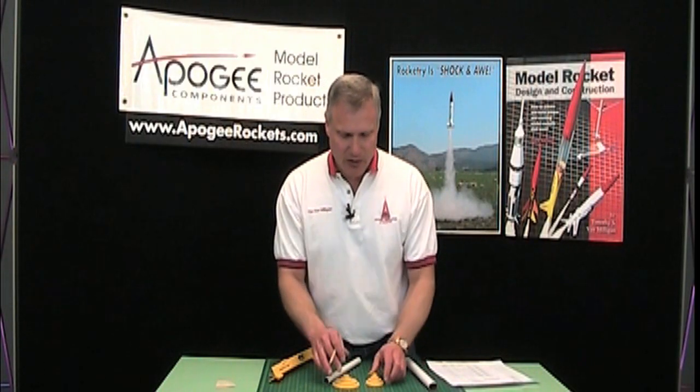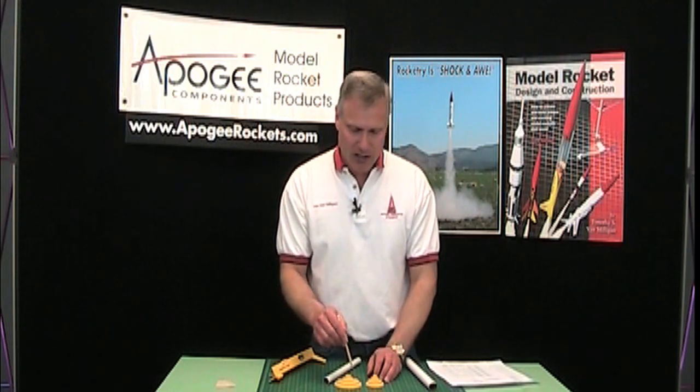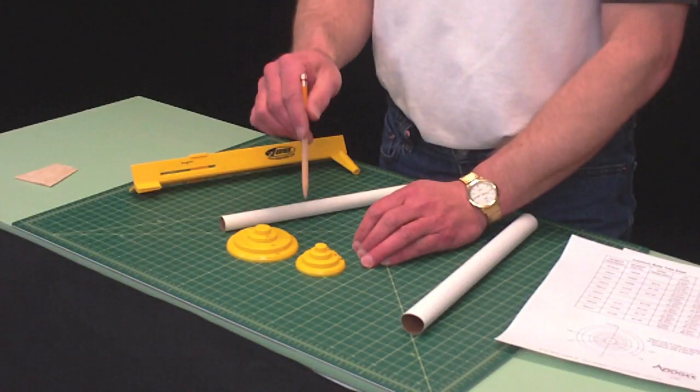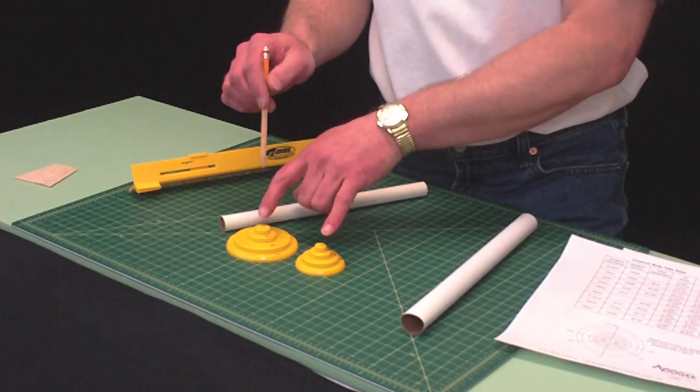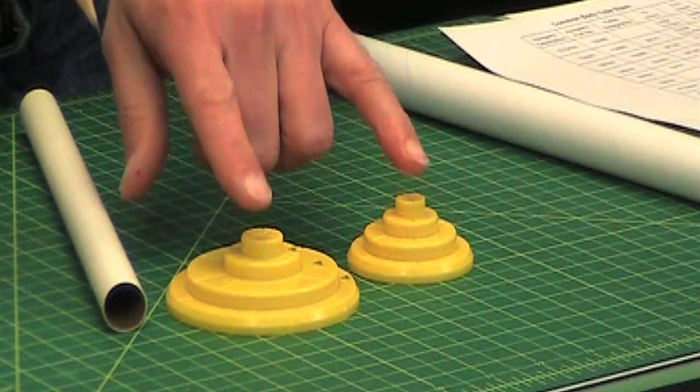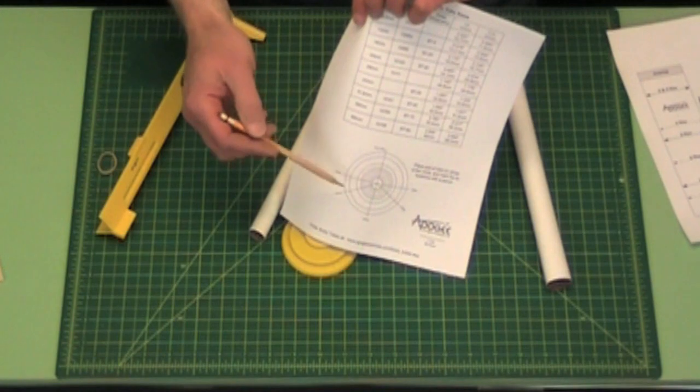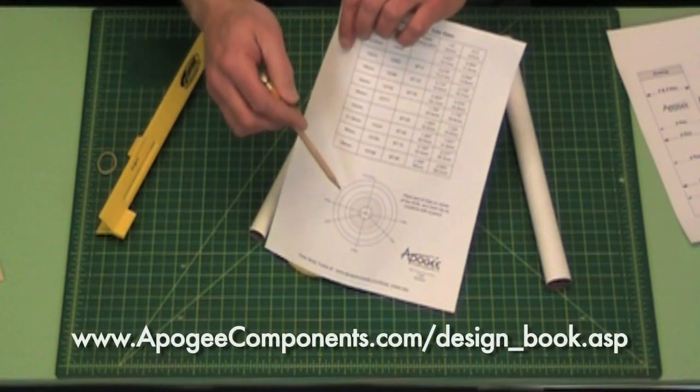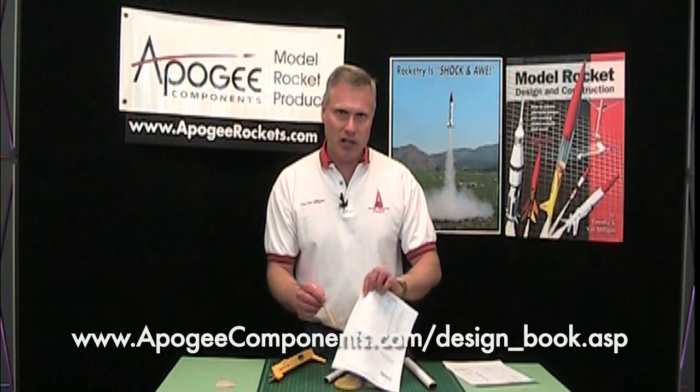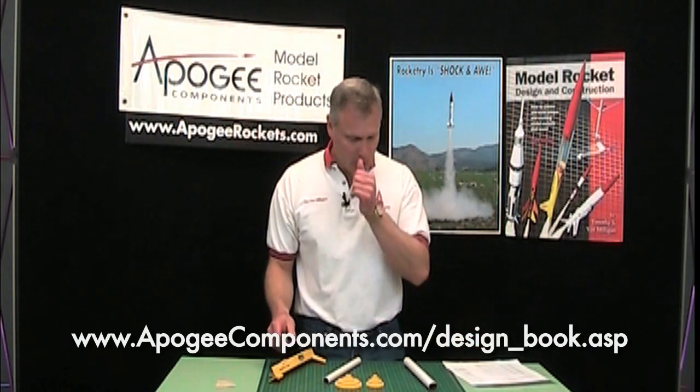The only thing that is kind of a mistake in these is they don't have a BT 70 tube for these size plastic rings, so you will have to use this one here. And if you want this one here, it's in the book Model Rocket Design and Construction and you can get that from us here at Apogee Components.